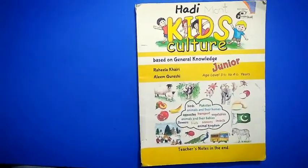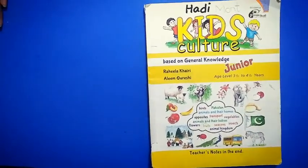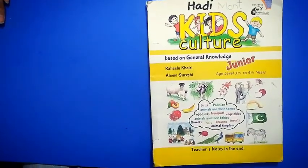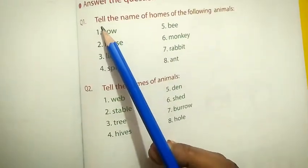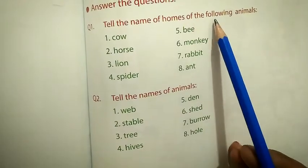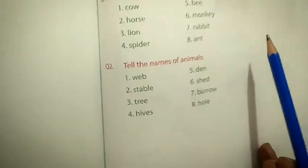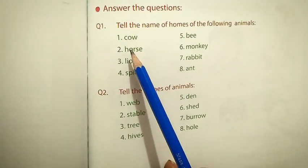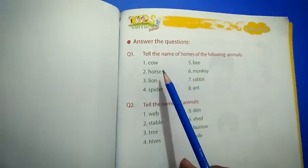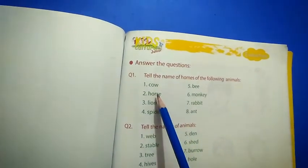Week 2, Day 3. Assalamualaikum students. Today I give you the lesson from your kids culture book. Open up your book. It's page number 45. Answer the question. Question number 1: Tell the name of whom of the following animal. Cow. As we learnt before, I hope you know. Tell me the name of the home of cow.